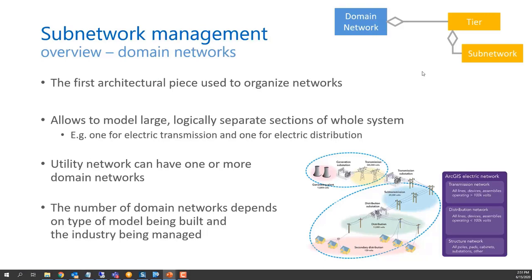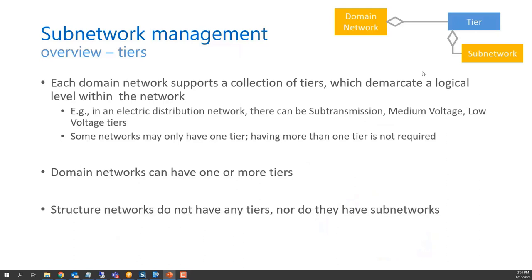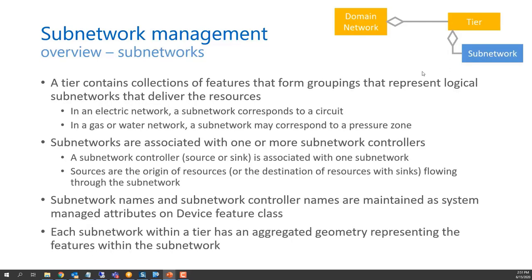Domain networks organize the network and model large logically separate sections of the whole system. A utility network can have one or more domain networks, with the number depending on the type of model and the industry being managed. Within each domain network, you can have a collection of tiers defining logical levels within the network — for example, in electric distribution: sub-transmission, medium voltage, and low voltage. Structure networks have no tiers or subnetworks.